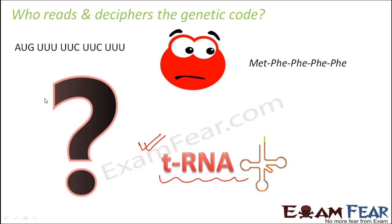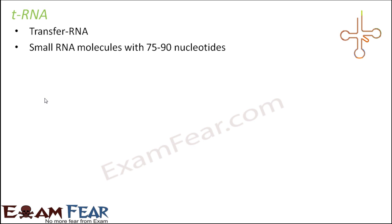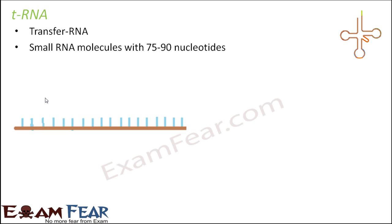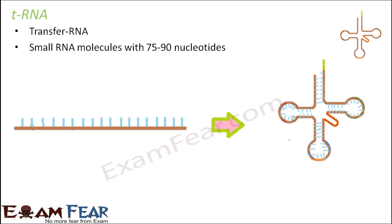Let us quickly try to understand the structure and behavior of tRNA. As you can see, the picture shows how tRNA looks like. These are small RNA molecules with 75 to 90 nucleotides. It is like any other RNA which has a single strand, but it is comparatively shorter than normal RNA strands — always less than 100 nucleotides. It acts as a carrier of amino acids, connecting amino acids to the correct codon on the mRNA.